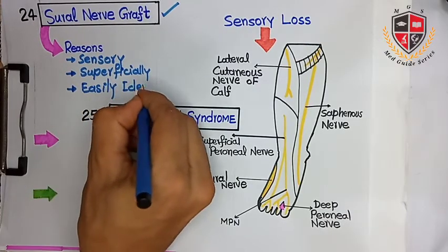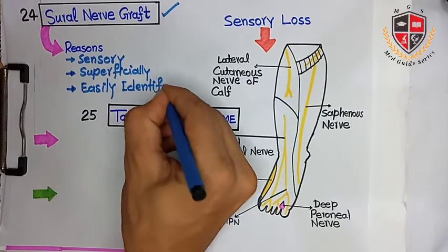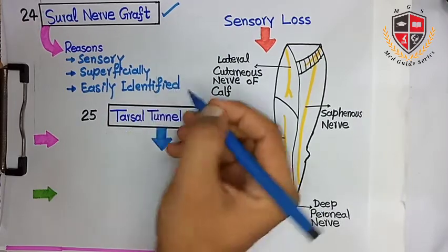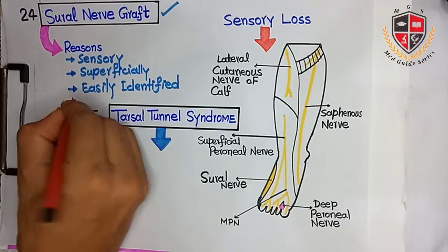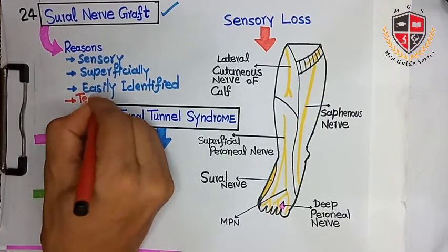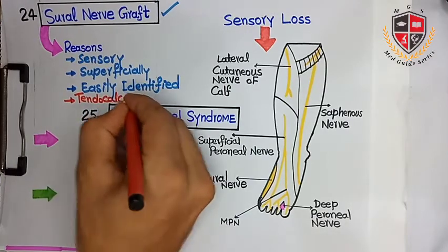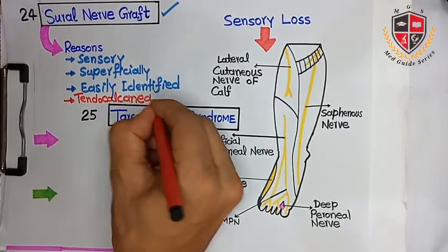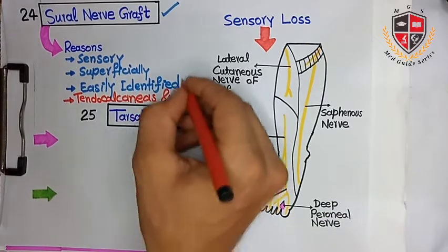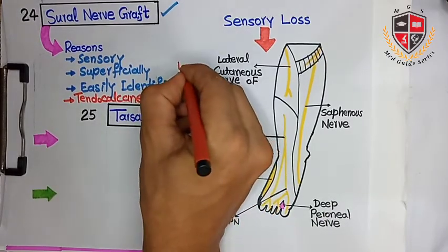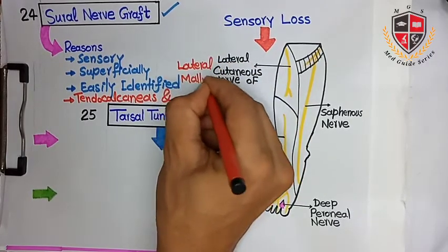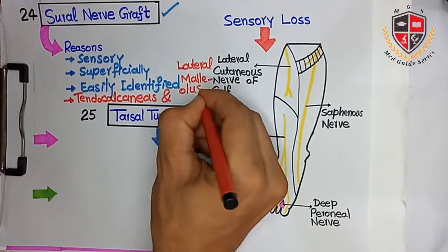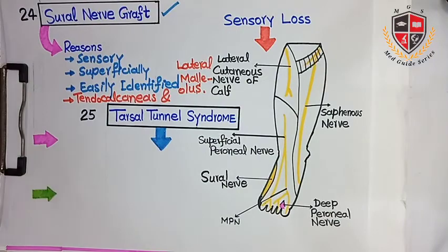The sural nerve lies between the tendo calcaneus and the lateral malleolus. It can also be renewable and grafted to other parts of the body. This was the Sural Nerve Graft.